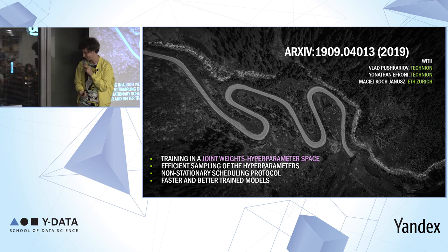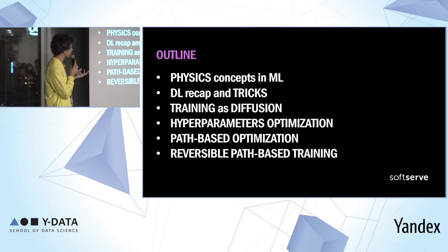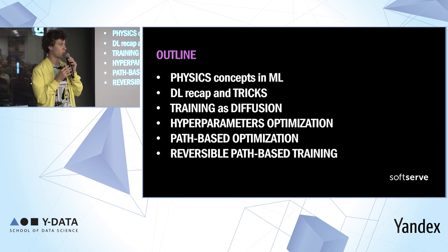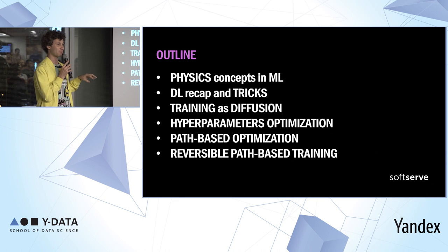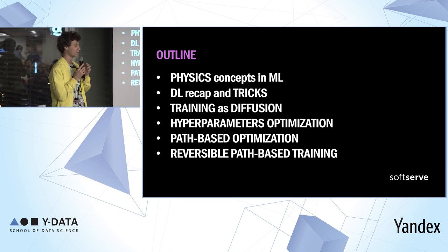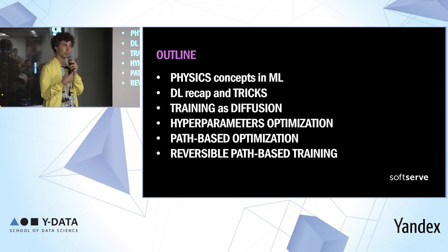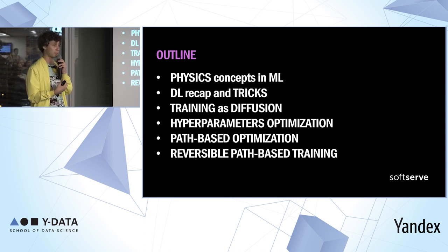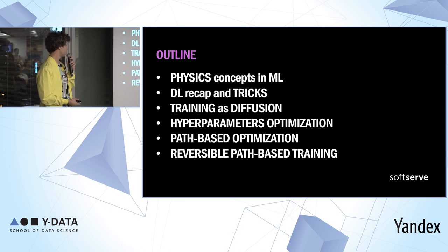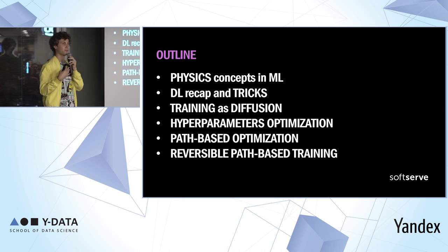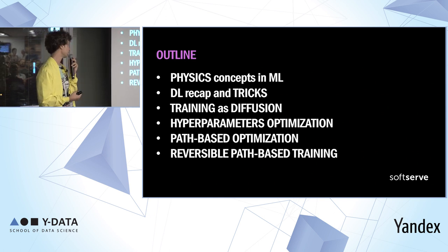The outline of this talk is: we'll start by borrowing some concepts from physics — I'm a physicist so I borrow a lot from physics. Then we'll recap some tricks from deep learning and why they work, linking them to physics — particularly to diffusion. Then we'll talk about hyperparameter optimization and path-based hyperparameters as we call it. Finally, we'll go to our algorithm, which is a reversible approach to making this path-based training.